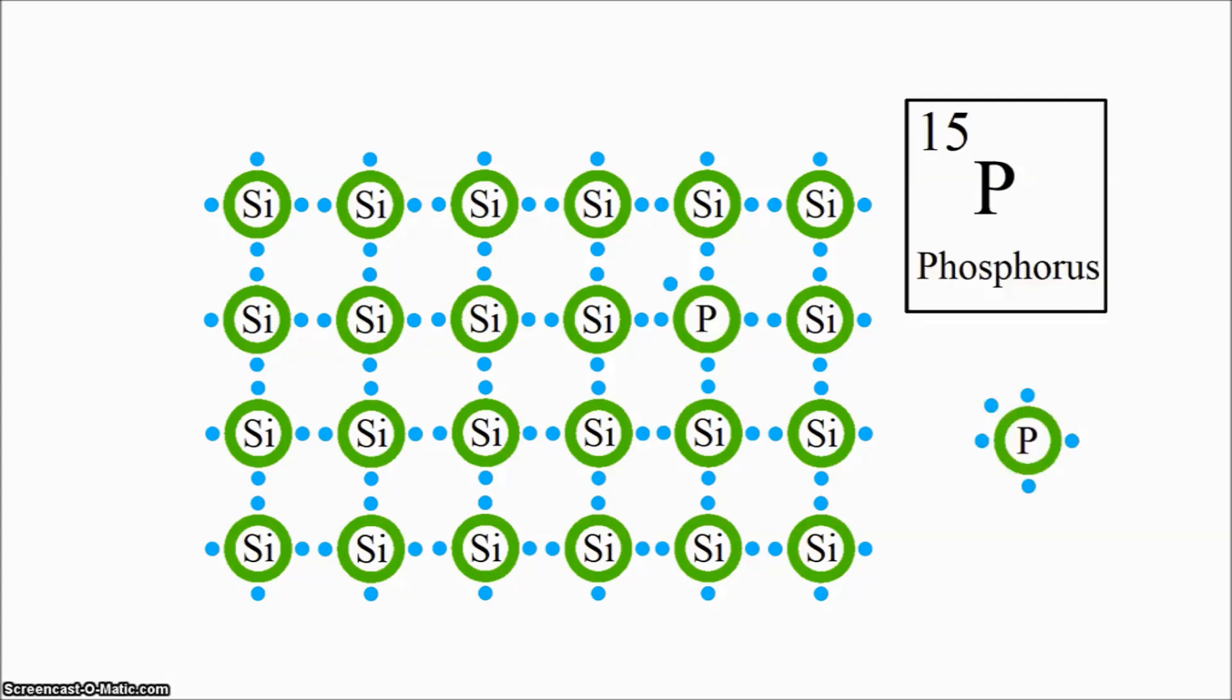Another common dopant for silicon is the element phosphorus. Unlike silicon, phosphorus has five valence electrons. Just like boron, phosphorus fits into the silicon crystal. This time, though, the phosphorus bonds with all four silicon atoms around it and still has one valence electron left over. This electron is not bonded and only needs a little bit of energy to leave the phosphorus atom altogether.